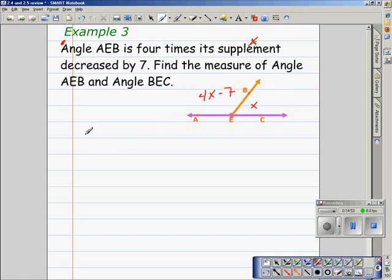Geometrically, we could represent that as the measure of angle AEB plus the measure of angle BEC is equal to 180, because they're a supplementary pair.